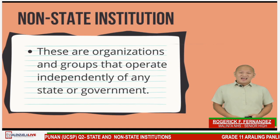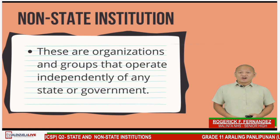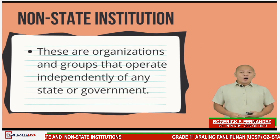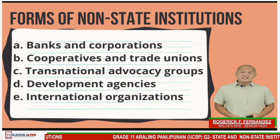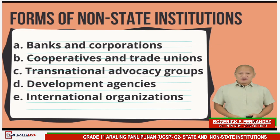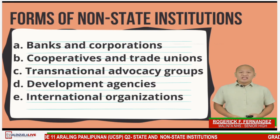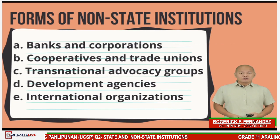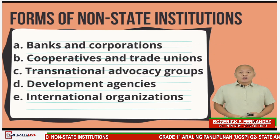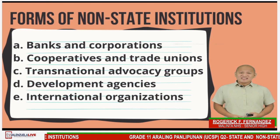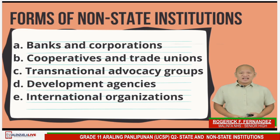On the other hand, non-state institutions are organizations and groups that operate independently of any state or government. Non-state institutions take many forms, ranging from large-scale for-profit firms to individual entrepreneurs to non-profit community groups. The following are some forms of non-state institutions: banks and corporations, cooperatives and trade unions, transnational advocacy groups, development agencies, and international organizations.